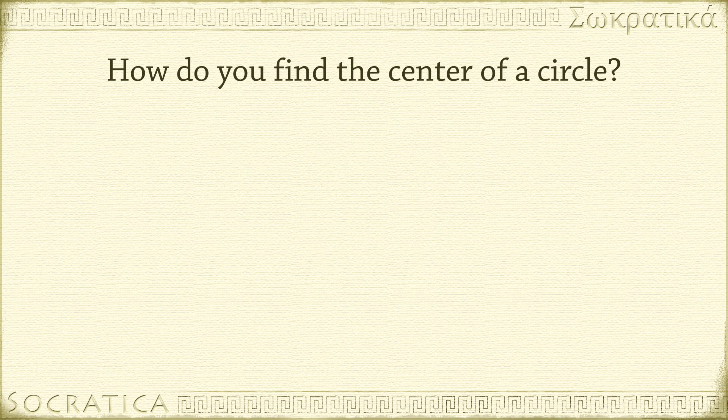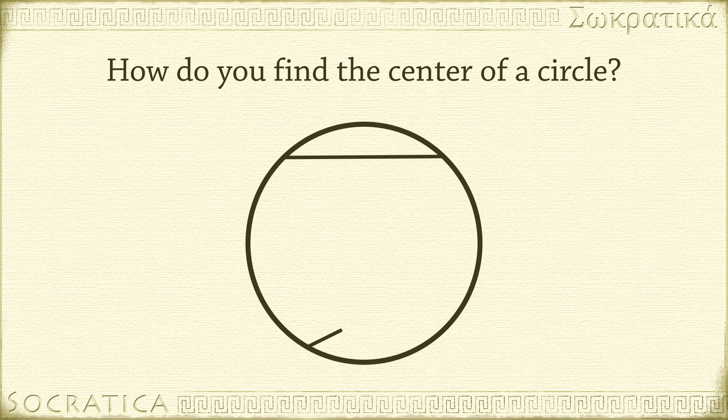Let's summarize this technique. Given any circle, you can find the center by drawing two chords, and then constructing the perpendicular bisectors for each chord. Since all perpendicular bisectors pass through the center, the point where the two bisectors intersect is the center of the circle.